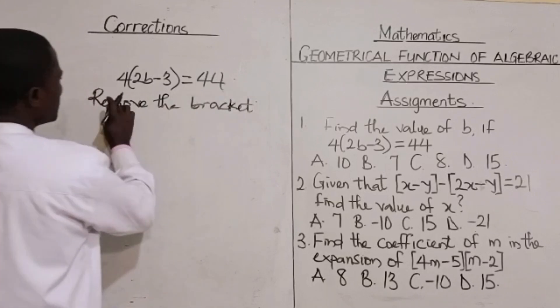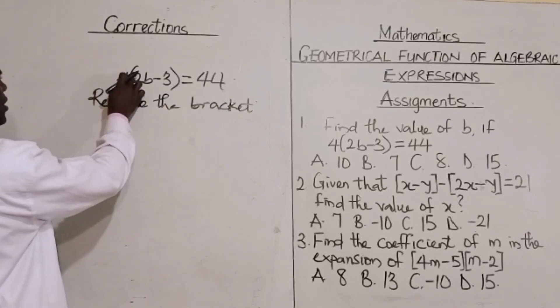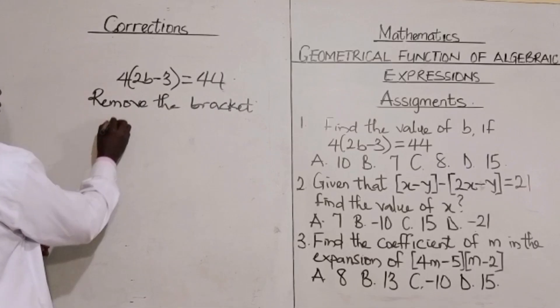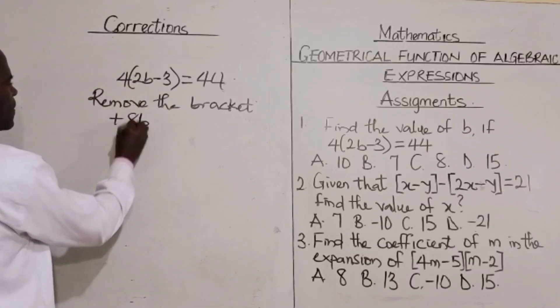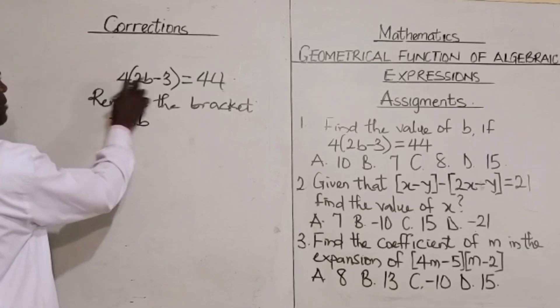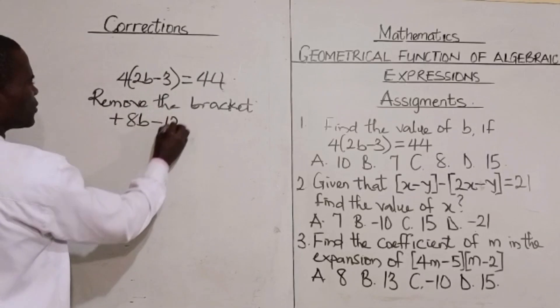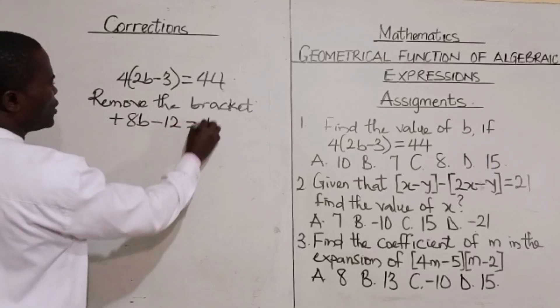We are going to say plus times plus gives us plus. 4 times 2b, that is 8b. Then plus times minus, that is minus. 4 times 3 is 12, equals 44.